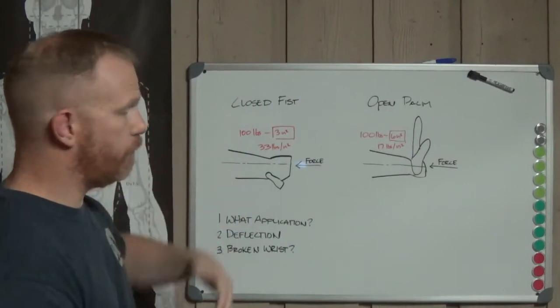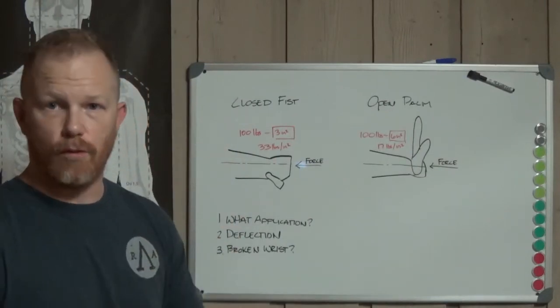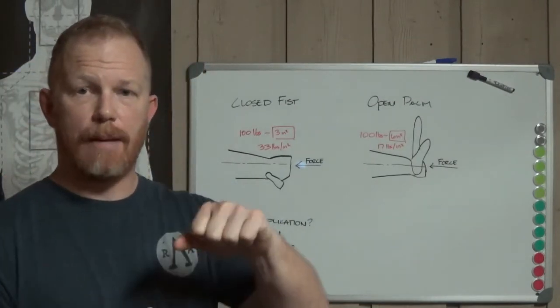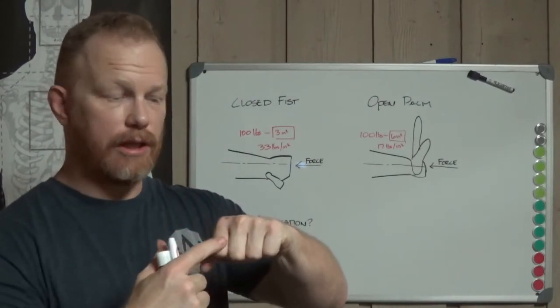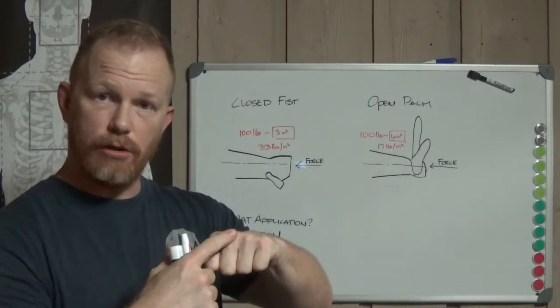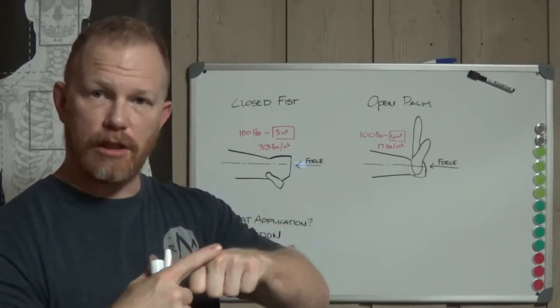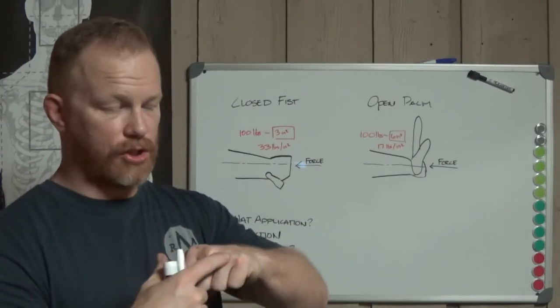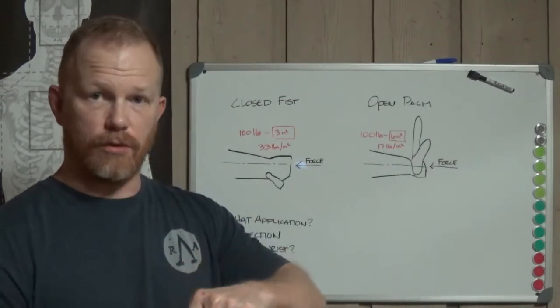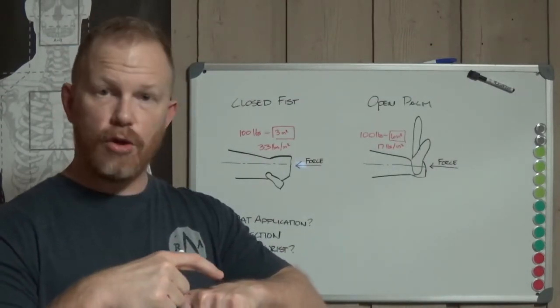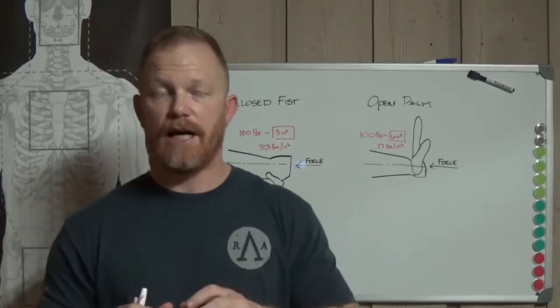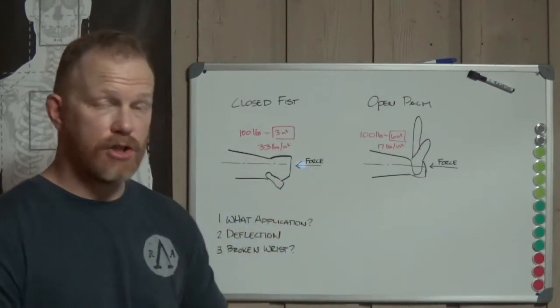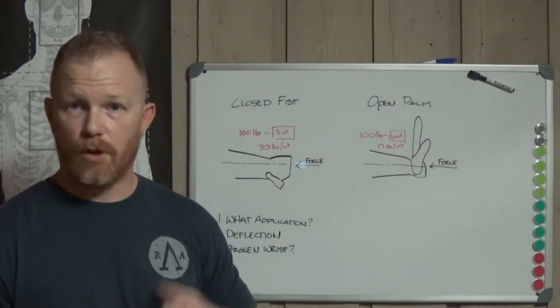First thing we're going to look at is the amount of force that's generated. We're just going to have some assumptions here just because everybody's fist size is different, everybody throws punches at different strengths. Just to compare apples to apples, we'll use some assumed values. So we look at an individual who fires a punch at 100 pounds of force. The amount of force that is delivered on that punch is delivered typically between three knuckles. We're going to take an area roughly two to three inches by one inch, we'll say three square inches. That gives us 33 pounds of force per square inch for a closed fist punch.